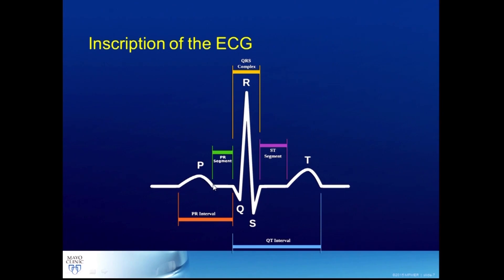So: slow conduction through the atrium, through the AV node, rapid conduction facilitated by that ventricular tissue, and then repolarization so that this can happen all over again.